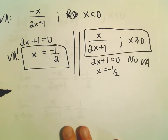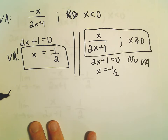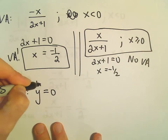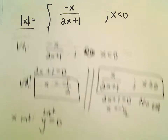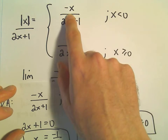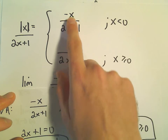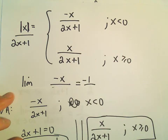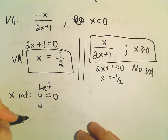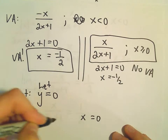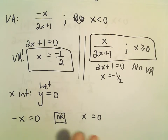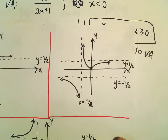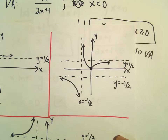To find the x-intercepts, we let y equal 0. For a fraction to equal 0, the numerator has to be 0. Looking at either formula, we would solve negative x equals 0 or x equals 0. In both cases we get x equals 0 as an x-intercept, which this graph certainly does.